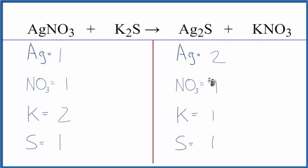So by doing it that way, it just makes things a lot neater. I can see I need a two in front of my AgNO3, one times two. That'll balance the silver atoms.